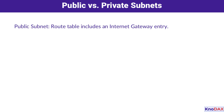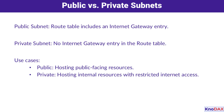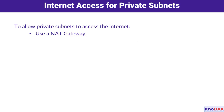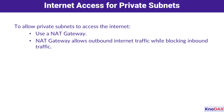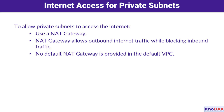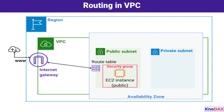A public subnet is designed for external communication. Its route table includes an entry for the Internet Gateway, allowing resources within it, like EC2 instances, to connect to the Internet. In contrast, a private subnet is isolated and lacks such an entry, making it ideal for hosting resources that don't need direct Internet access, like databases or internal applications. If resources in a private subnet need limited Internet access — say, for downloading updates or patches — this is where NAT Gateway comes into play. NAT Gateway allows resources in private subnets to make outbound connections to the Internet while blocking unsolicited inbound traffic. Unlike the Internet Gateway, NAT Gateway is not included in the default VPC setup, so you'll need to configure it manually.